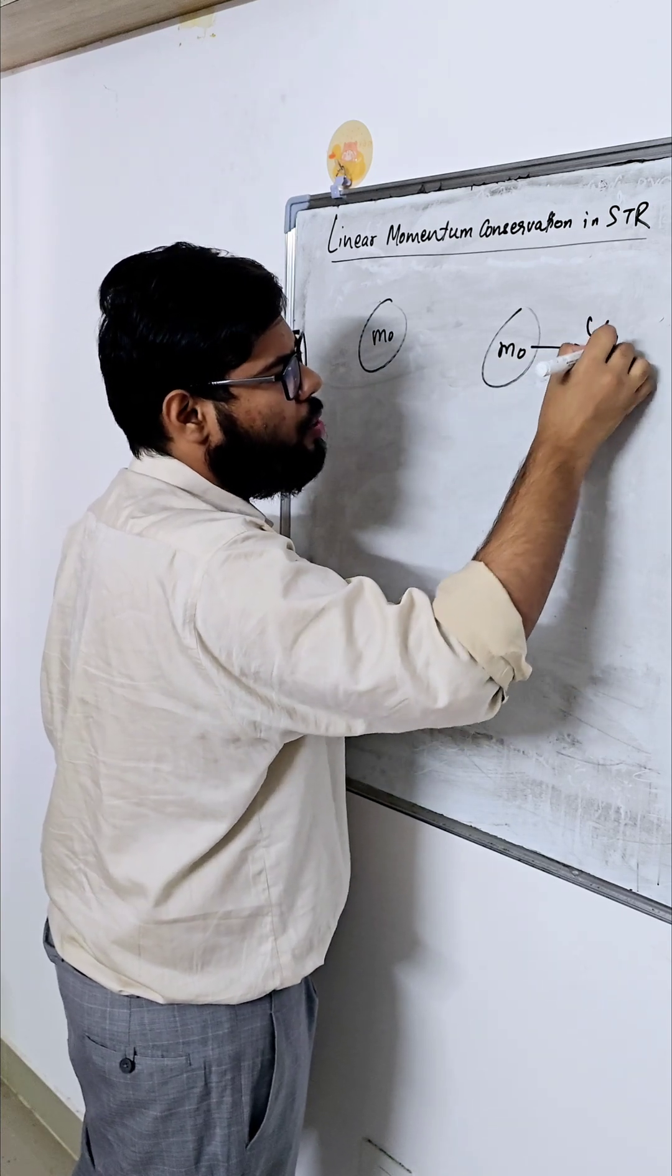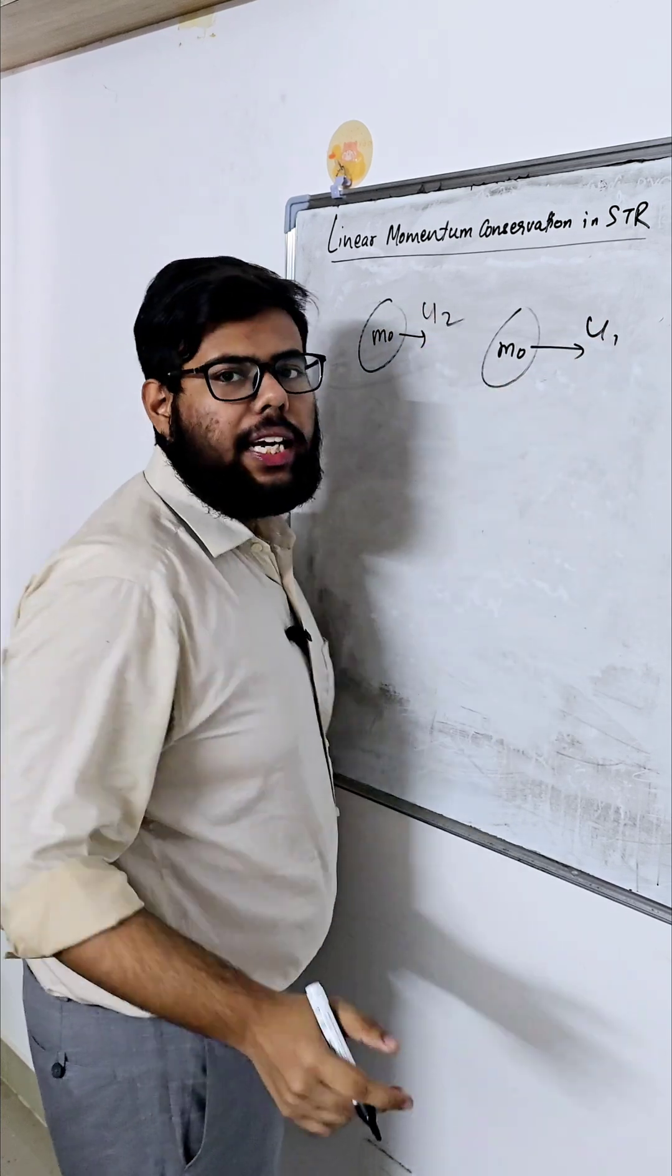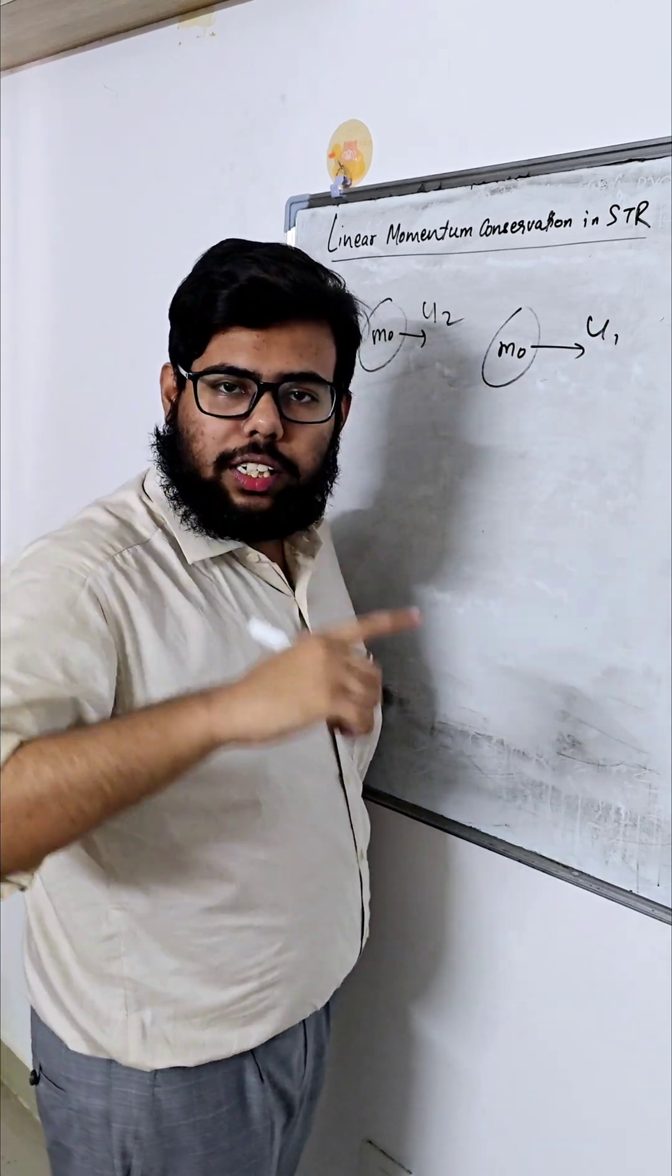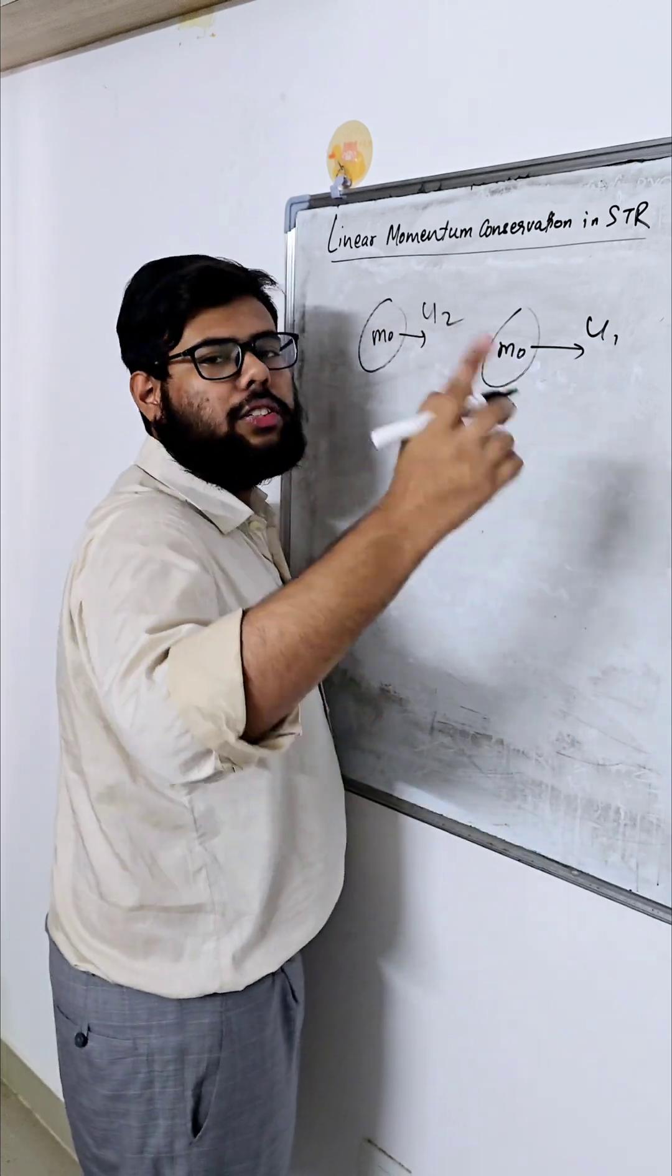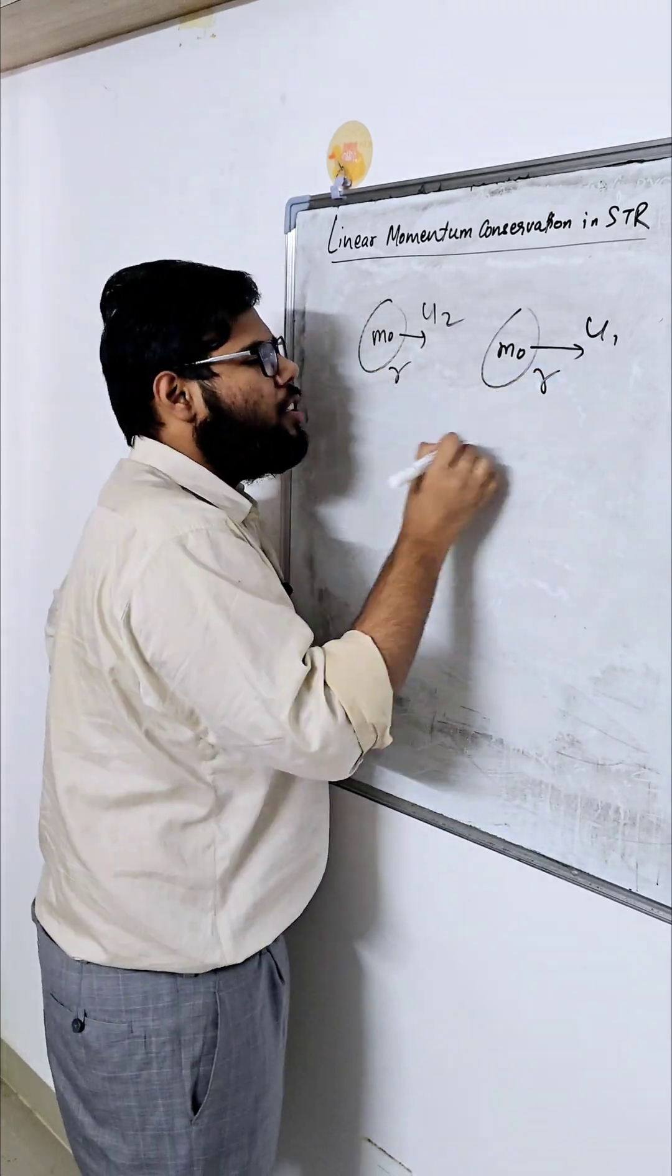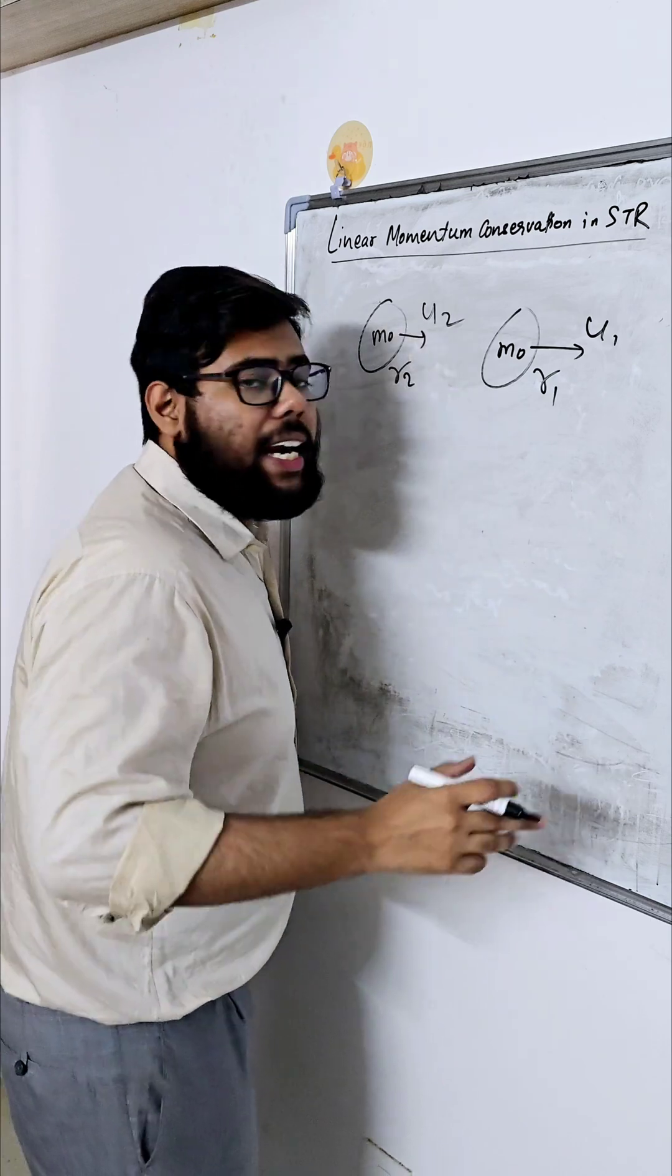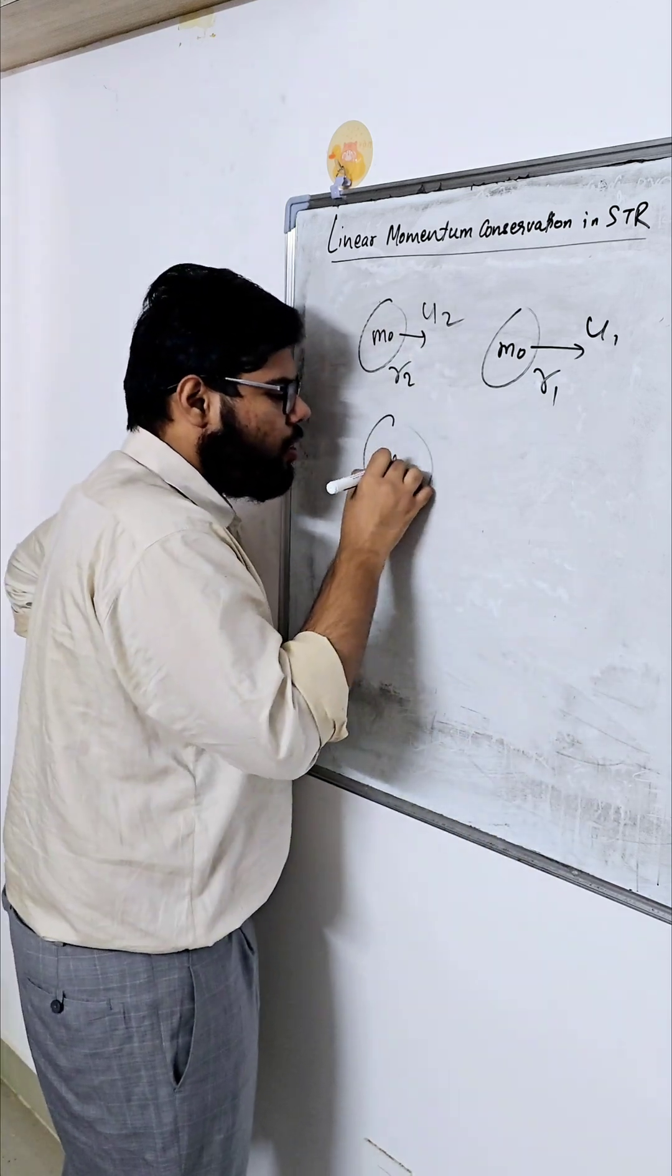And one is moving with the velocity U1 and this is moving with the velocity U2. And since the objects have the velocity near the speed of light, so they will have an associated gamma also. So let's name it as gamma1 and let's name it as gamma2.